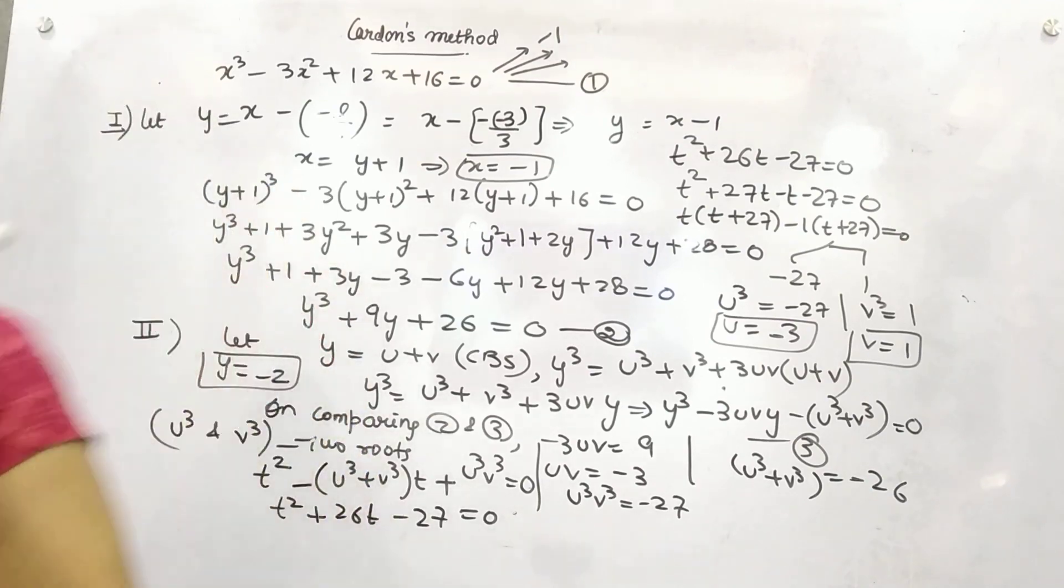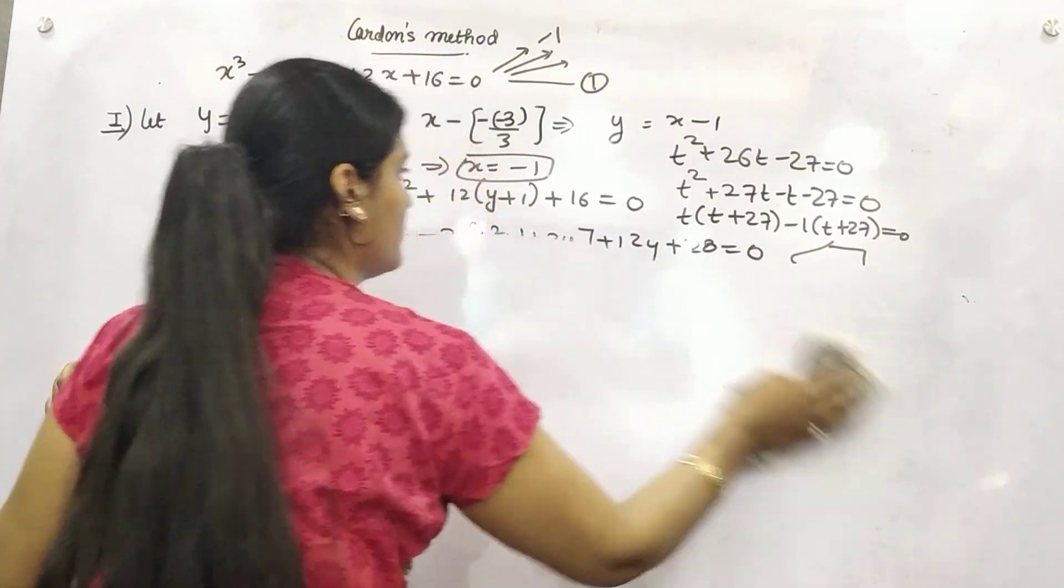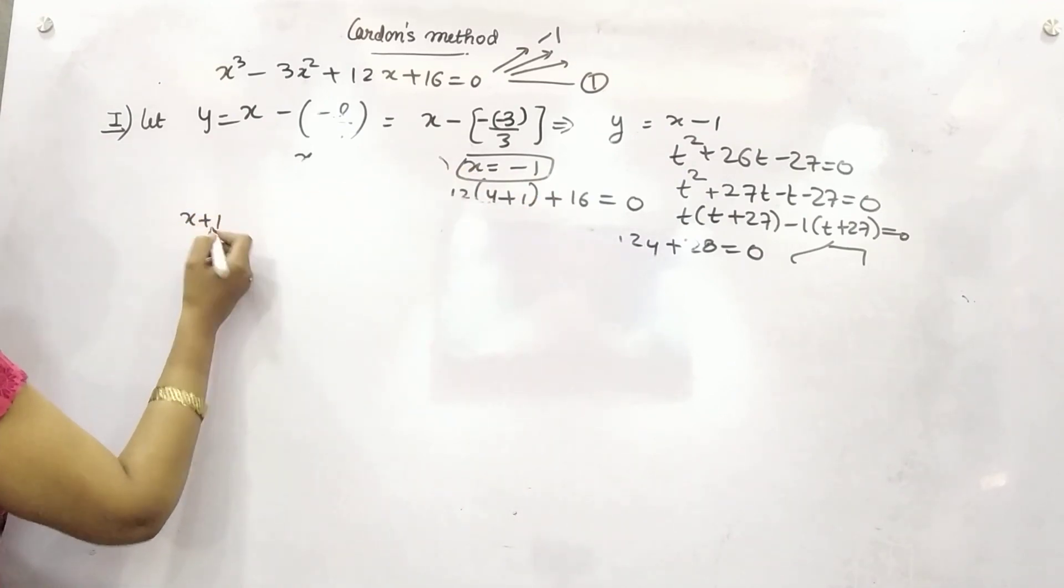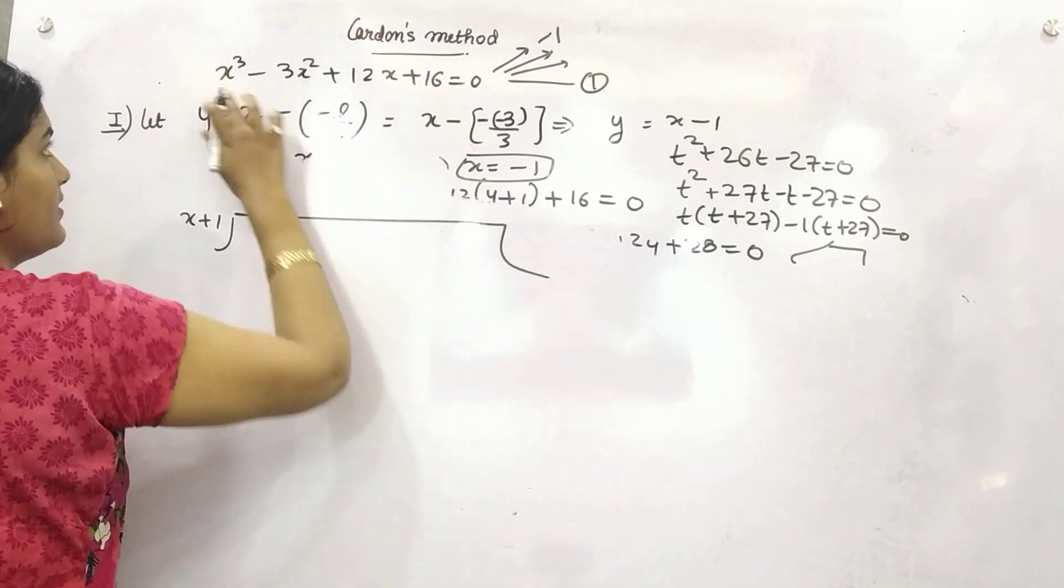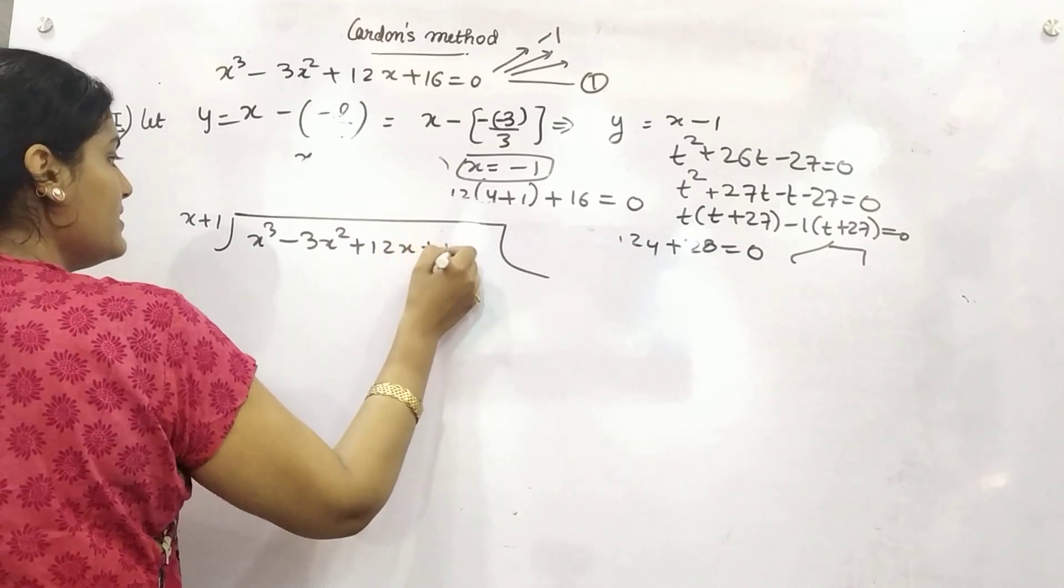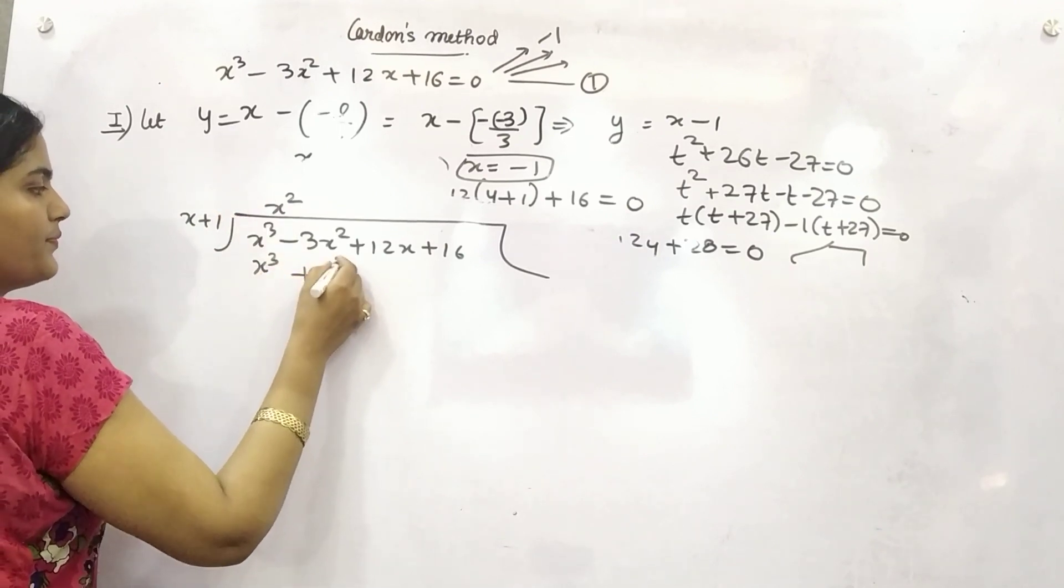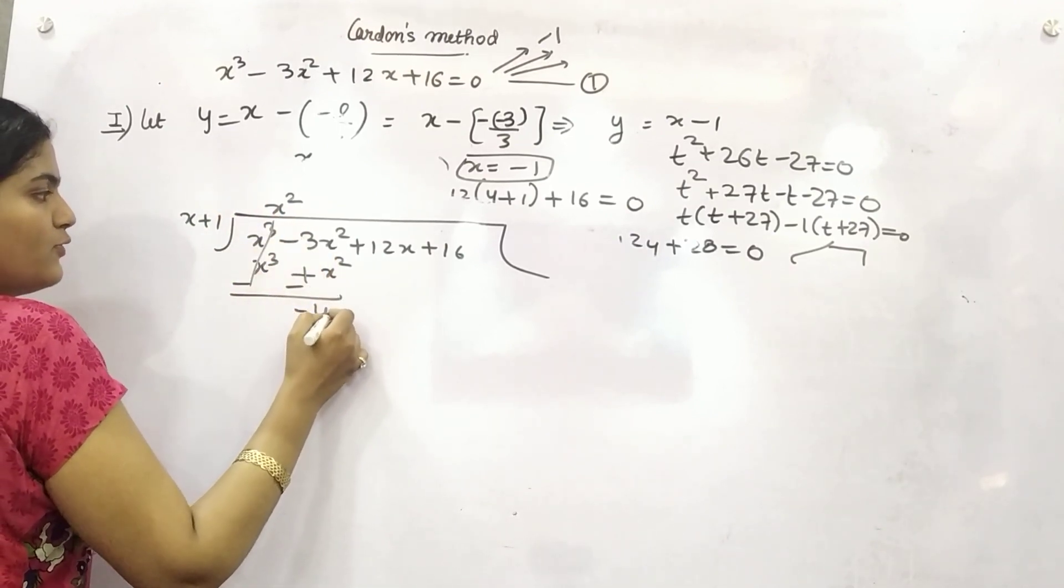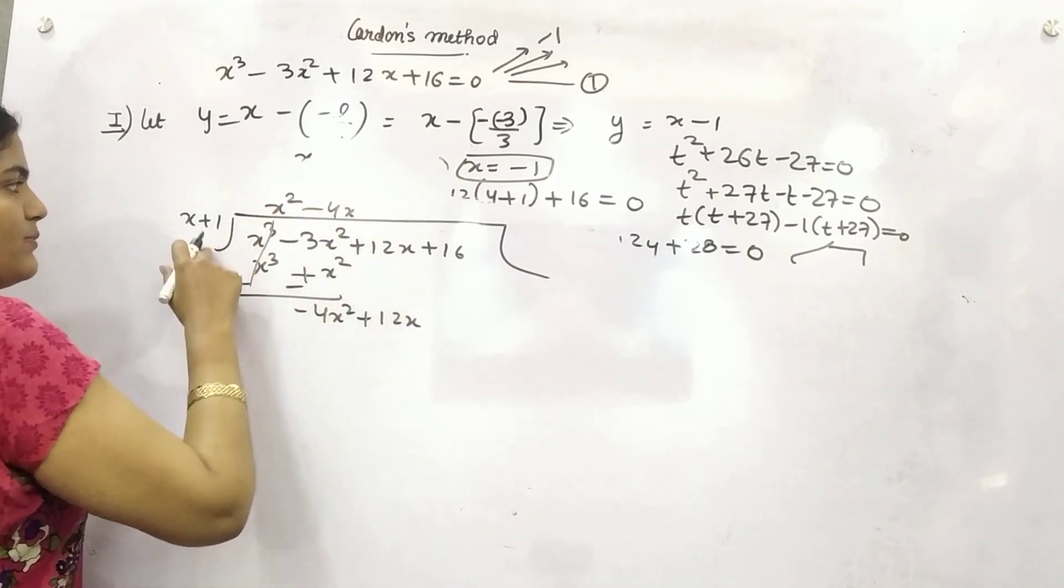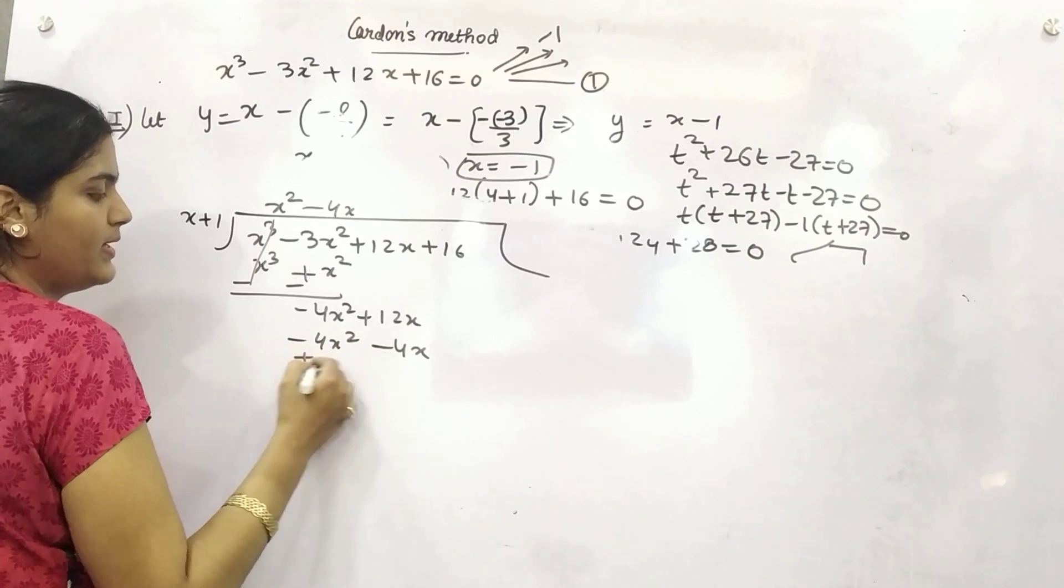Whether it is long division or any of the division. So let's divide it. So you can see here x plus, minus 1 is your factor. This is x cube minus 3x square plus 12x plus 16. x is here. So you need x square to cancel it. Plus x square. Subtract it. Minus 4x square plus 12x. So this is what you want to make it. You need minus 4x so as to make it minus 4x square. Minus 4x plus plus.